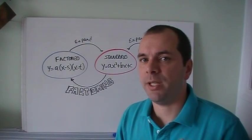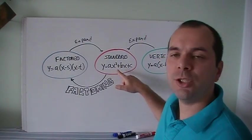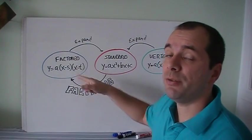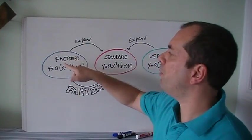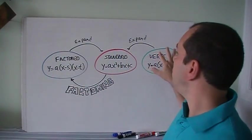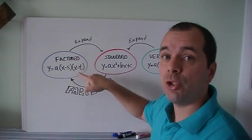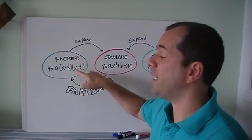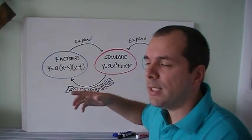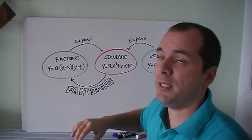Today we start talking about factoring. Factoring is the process that's going to take us from standard form to factored form. We already know that from factored form we expand it, from vertex form to standard we expand it. Now that's just one way to go to factored form. Why would we go to factored form? Because we need to find the zeros for some reason.